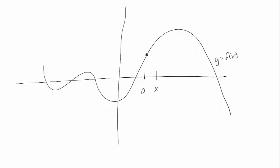In theory this secondary function could look like anything. We'll start with simple functions and build up to more complicated ones. I'll call it 'a for approximation.' At a point which is easy to calculate, my approximation function and my actual function are pretty similar. What I really want is the value of my actual function, but I'll settle for the value of my secondary function — something that's easy to calculate and hopefully close.